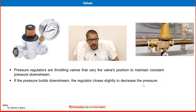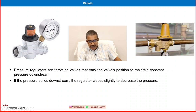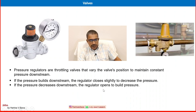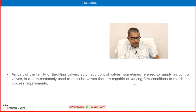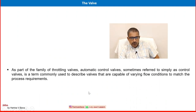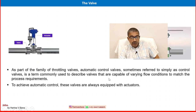One important application is just before a control valve, and another important application is in pneumatic actuator-operated control valves. If pressure builds downstream, the regulator closes slightly to decrease the pressure. If pressure decreases downstream, the regulator opens to build the pressure — automatically throttling to maintain downstream pressure. Control valves are the most common example of throttling valves, sometimes referred to simply as control valves, which continuously vary flow conditions to match process requirements.